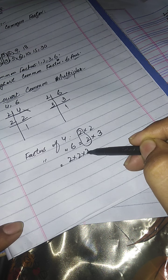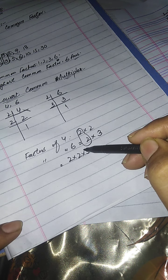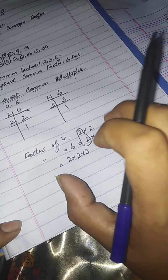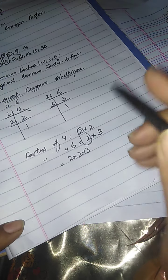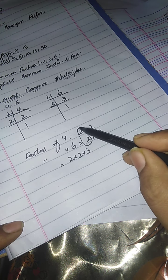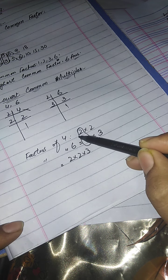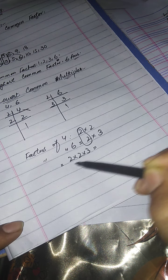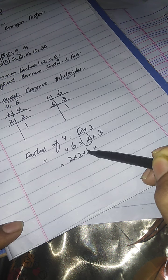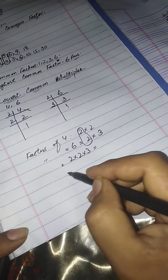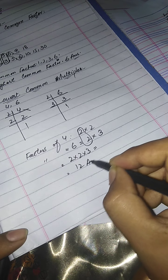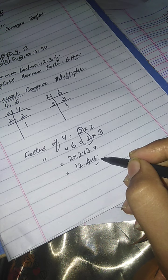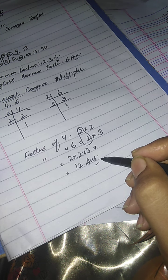For LCM, we write the common factors only once, then also multiply the remaining non-common factors. So we get 2×2×3. Unlike HCF where we only kept the common factors, in LCM we include everything. So 2×2=4 and 4×3=12. The LCM is 12.